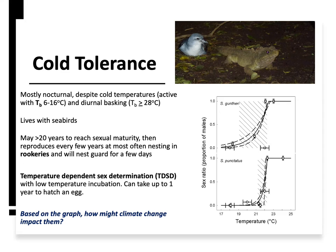That's a recipe for disaster when humans are involved. A graph shows temperature-based sex determination: the warmer the temperature, the more males you get in the population. These are two graphs showing the two different species — Gunther, primarily the mainland species and more common of the two, and punctatus from Brother Island, the smaller population.